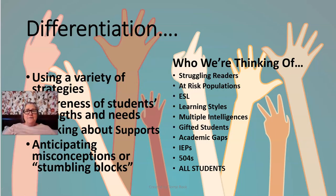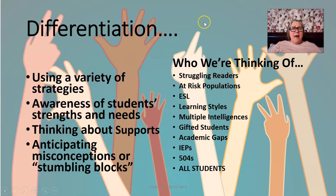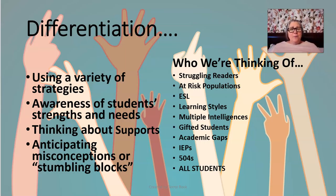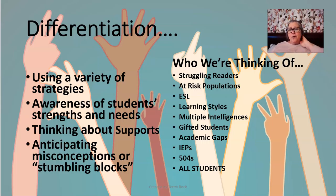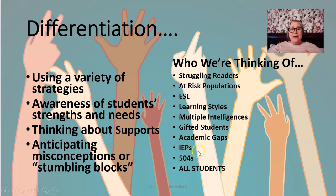When we're differentiating, we're not just coming up with a different thing for every student to do. It's about using a variety of strategies that will help everybody — being aware not just of what your students are bad at, but what they're good at. Their strengths can help them with their needs. Think about supports, anticipate misconceptions and stumbling blocks, and what you can do to prevent those from being such a problem. We're not just thinking about students with IEPs and 504s — there was a time when there was no such thing, but we still had students who were at risk.